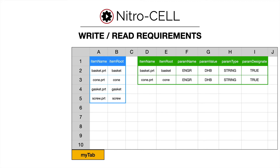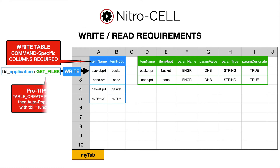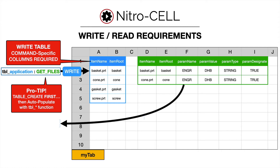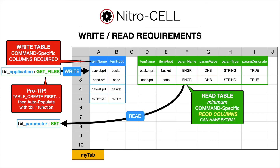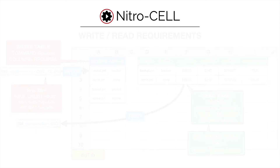When it comes to reading and writing tables, there are a couple of things to know. When writing a table, there are command-specific columns required. For example, the table application get files function is going to write out specific columns. It's important to use a table create first and then populate it with the particular table function — in this case, table application — because it will automatically generate the correct columns. When reading tables, such as setting parameters from existing content, the read requires minimum command-specific columns but can have extra. Reads can also work from any Excel table or Power Query result as long as they're structured correctly for the function.